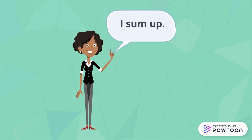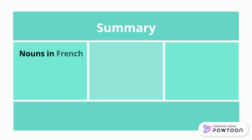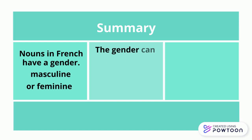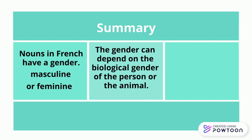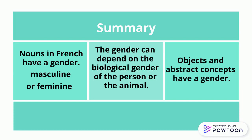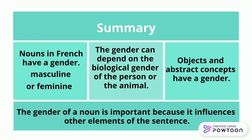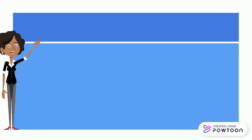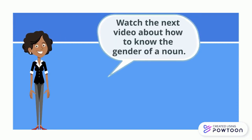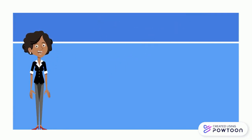To sum up the main ideas: nouns in French have a gender — they are either masculine or feminine. The gender can depend on the biological gender of the person or animal designated by the noun, but not always. Objects and abstract concepts also have a gender. The gender of a noun is important because it influences other elements of the sentence. I encourage you to watch the next video to know more about how you can determine the gender of a noun. Au revoir!